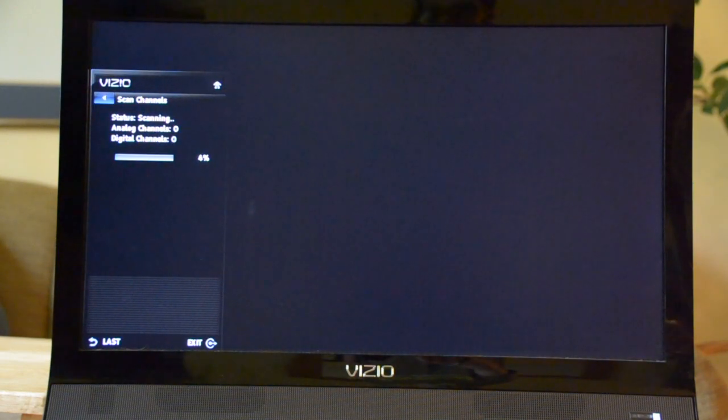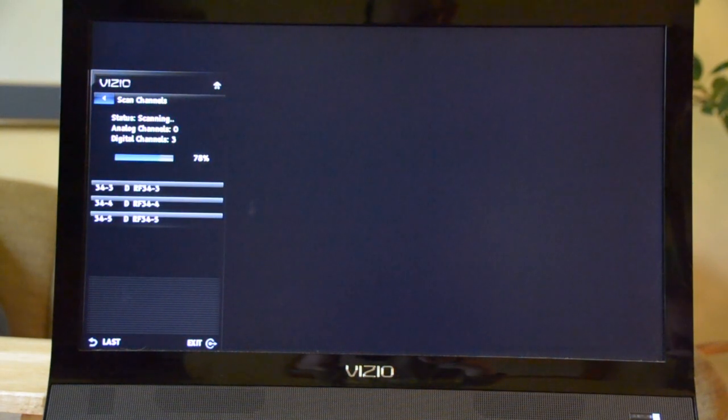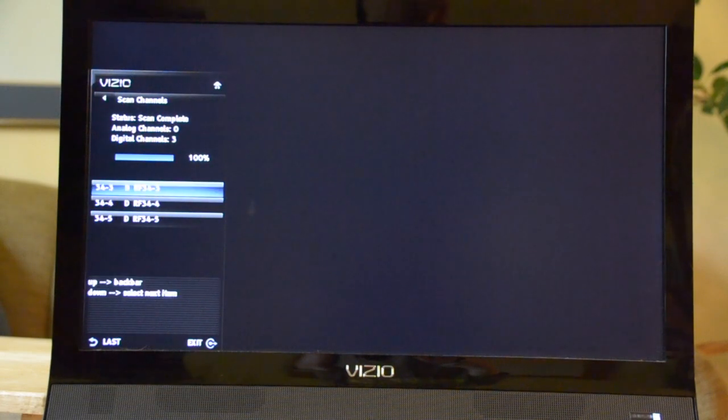Your TV will begin looking for channels that it can receive through the antenna. Your screen will list the channels it finds. Once it's done, you can simply exit the menu and scroll through your channels using your channel button on your remote.